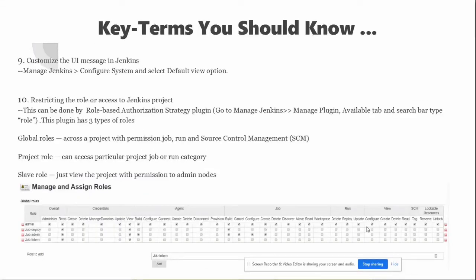You will likely get one exam question on how to notify users when your Jenkins environment is unavailable. All you need to do is go to Manage Jenkins > Configure System and select a default view option where you can put a message — for example, 'Jenkins will not be available between 5 a.m. and 10 a.m.' Anyone who logs in will then know that the environment is unavailable for running builds.